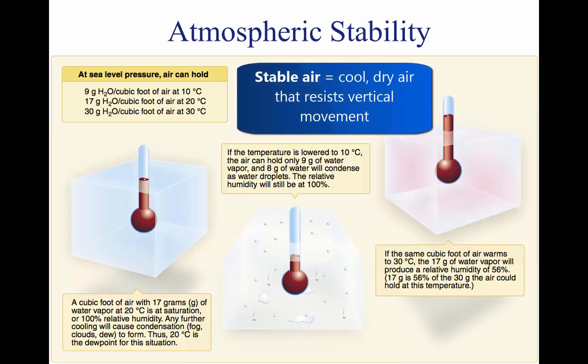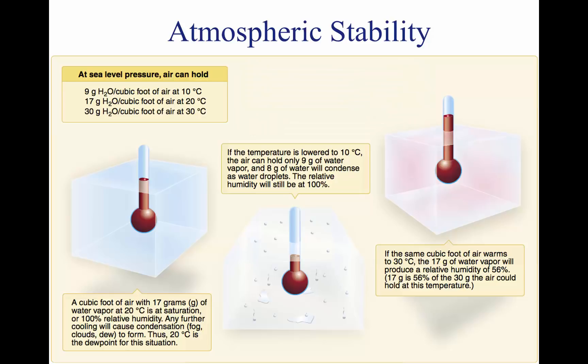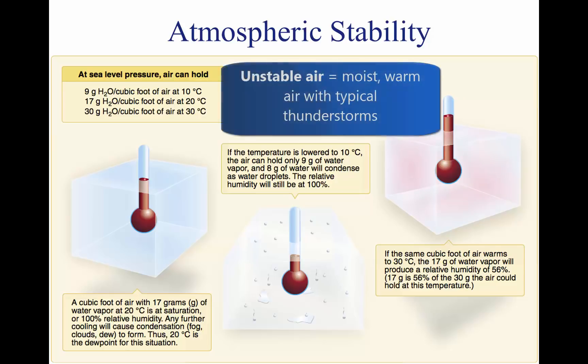Cool, dry air is very stable and resists vertical movement, which leads to good and generally clear weather. The greatest instability occurs when the air is moist and warm, as it is in the tropical regions in the summer. Typically, thunderstorms appear on a daily basis in these regions due to the instability of the surrounding air.